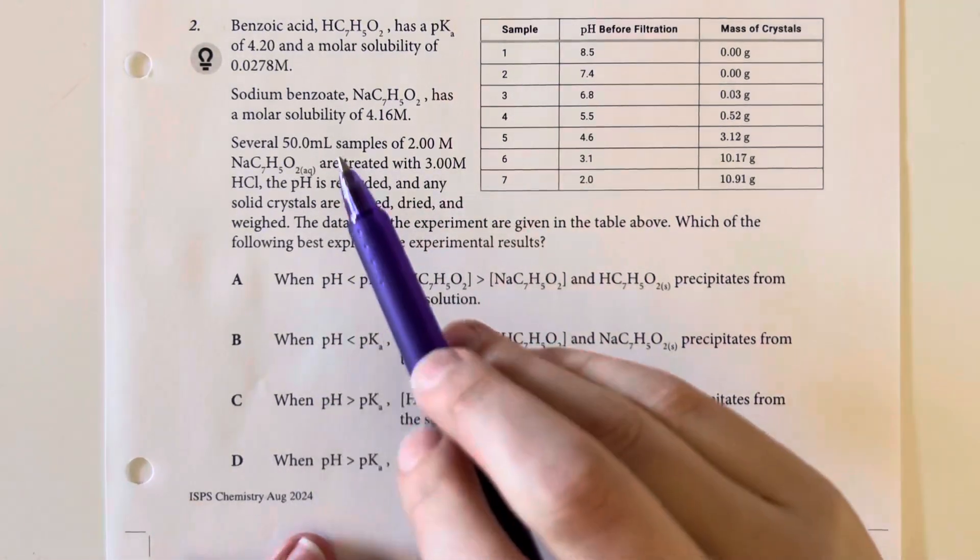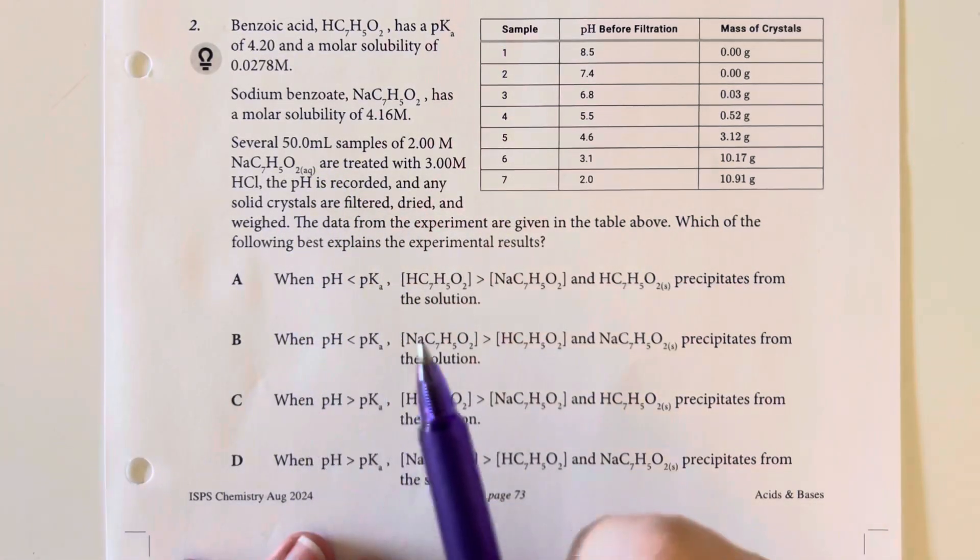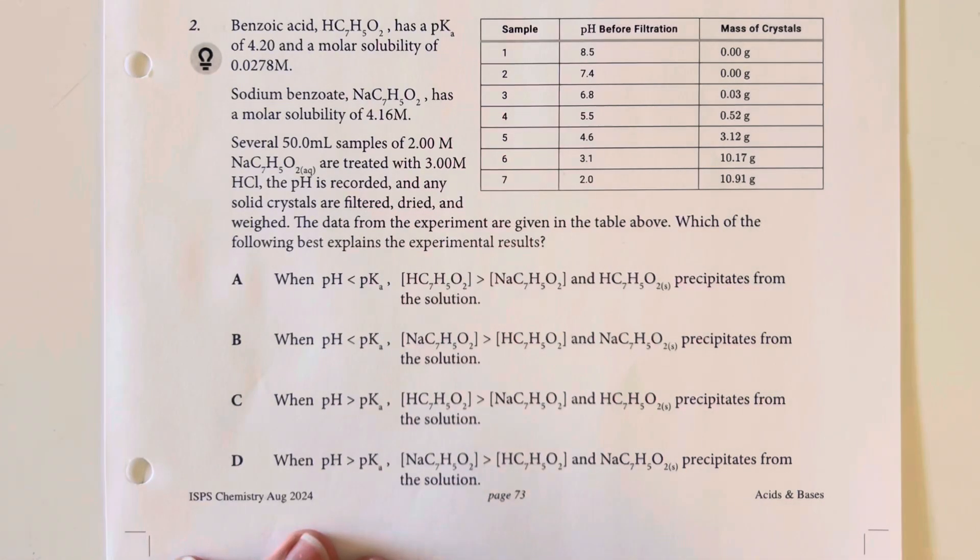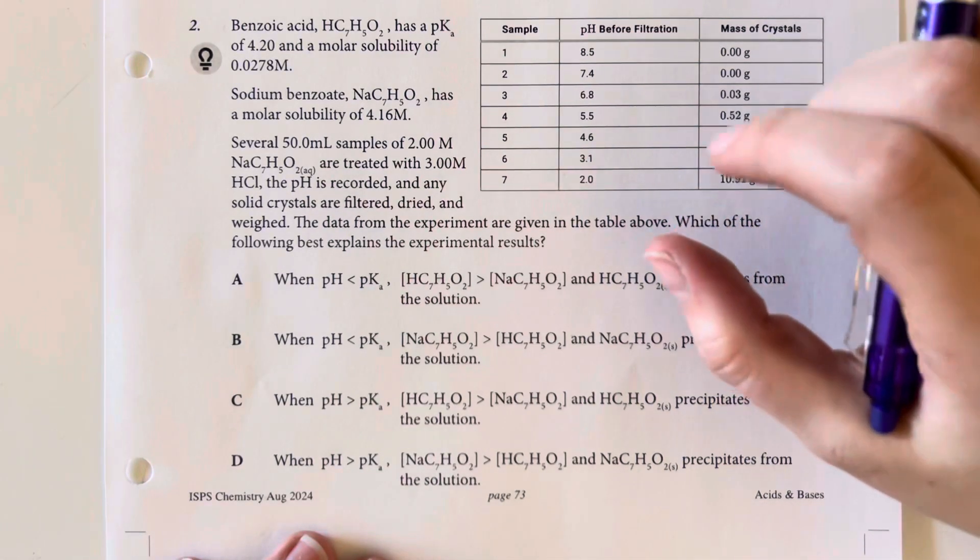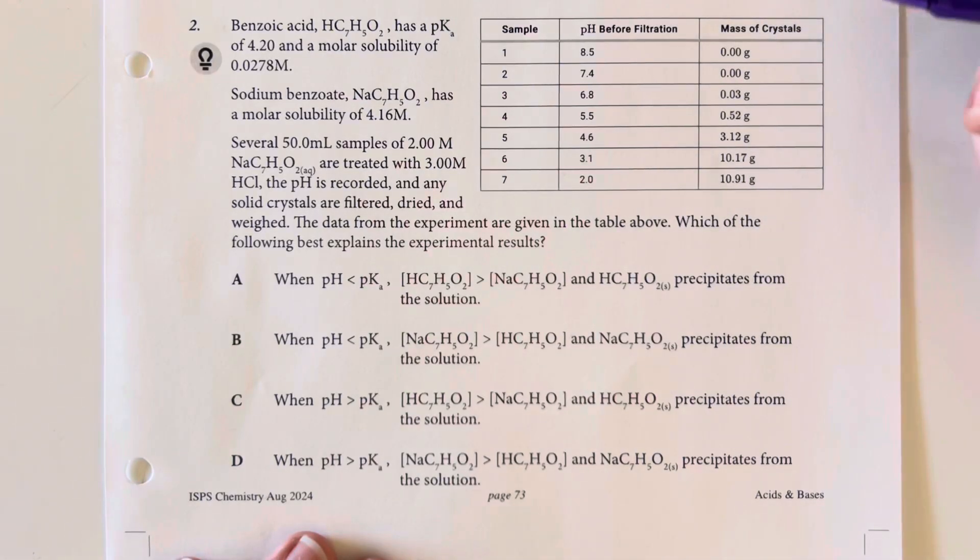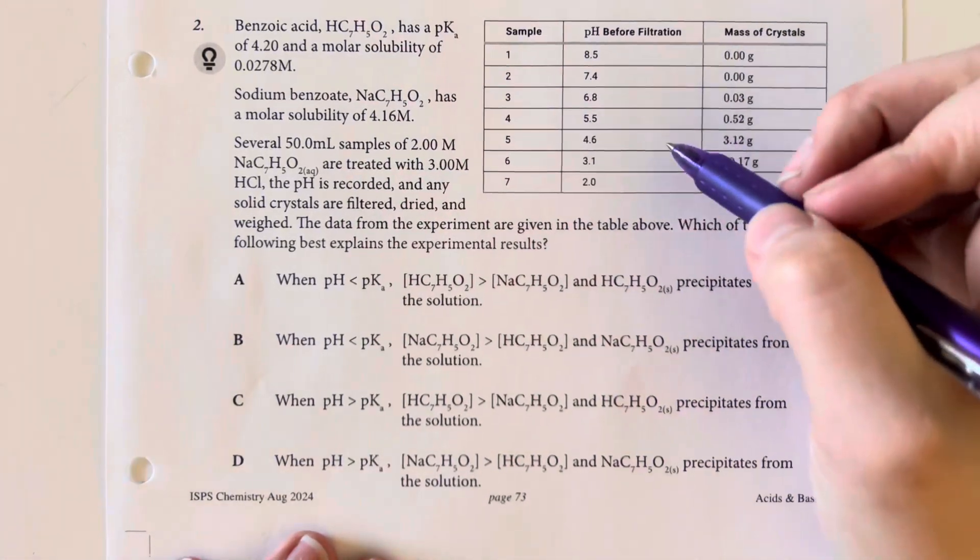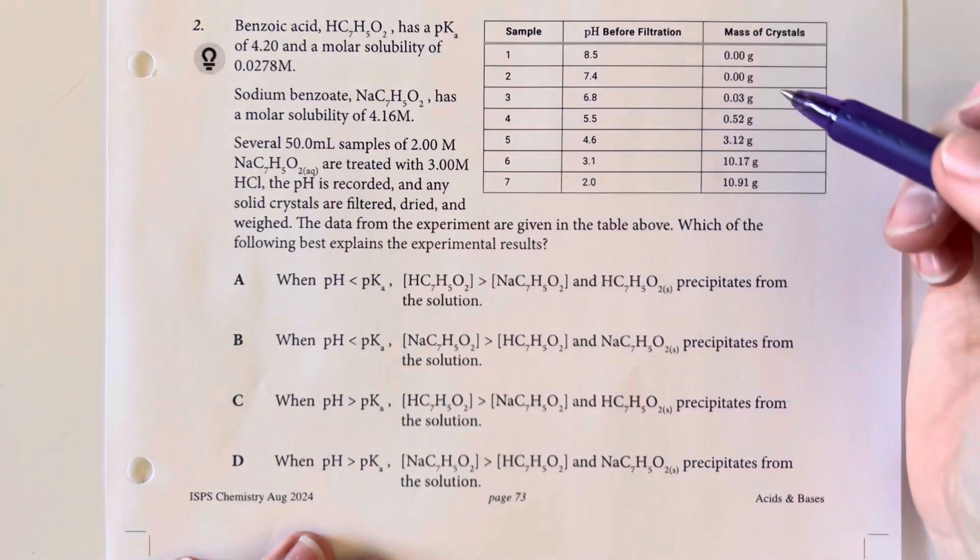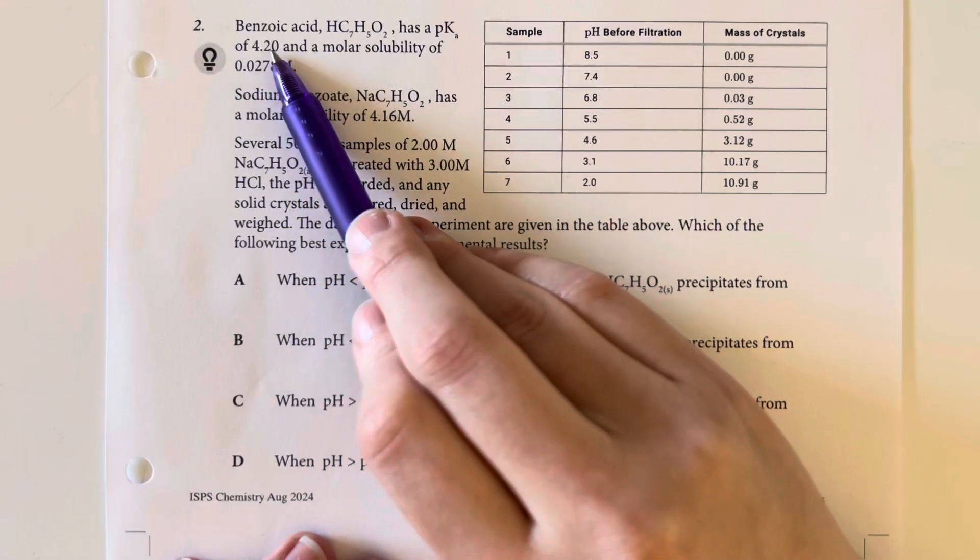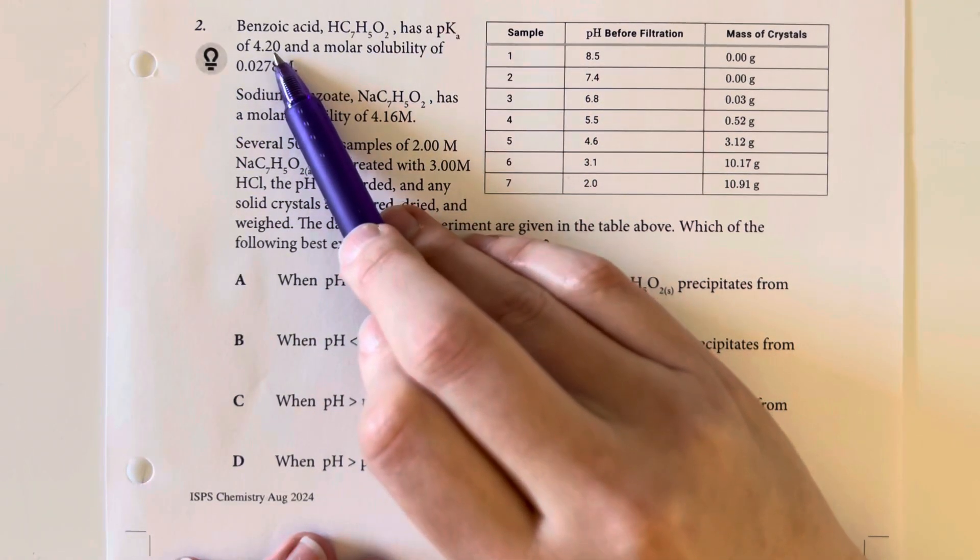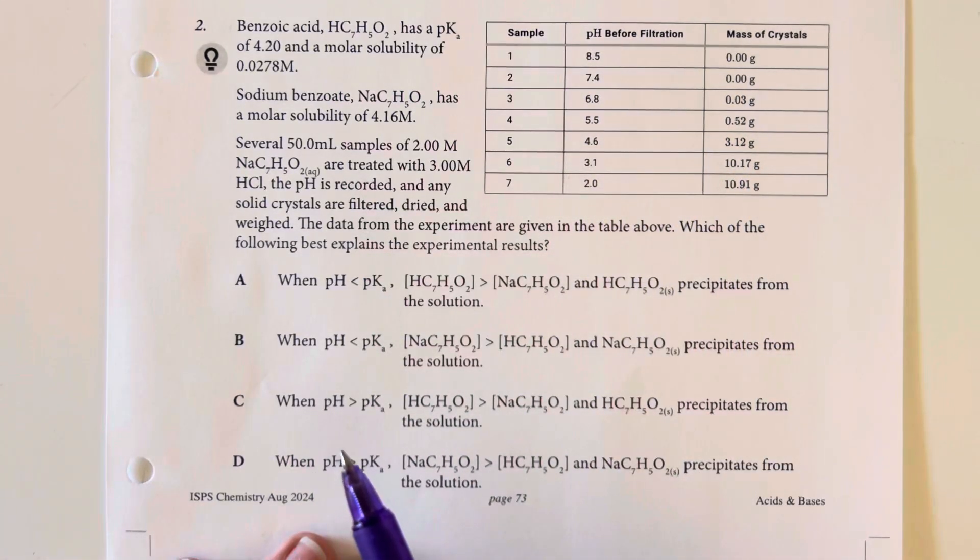So we are going to decrease our pH. We're going to make the pH more acidic. And as we make the pH more acidic, we are going to precipitate out more crystals, and that's going to be the benzoic acid. So we can say that when the pH is less than the original pKa, because pKa for benzoic acid is 4.2, when the pH is less than 4.2, we do precipitate out more of the benzoic acid.